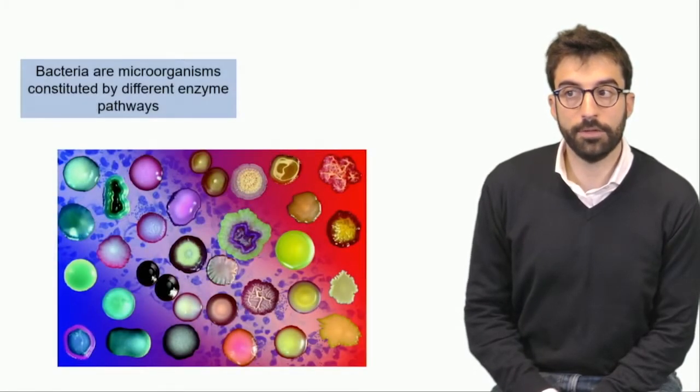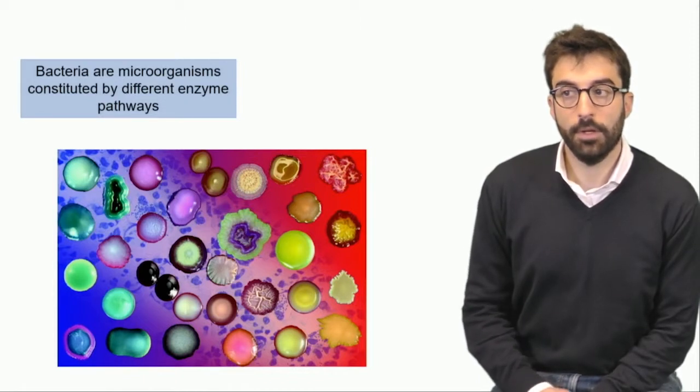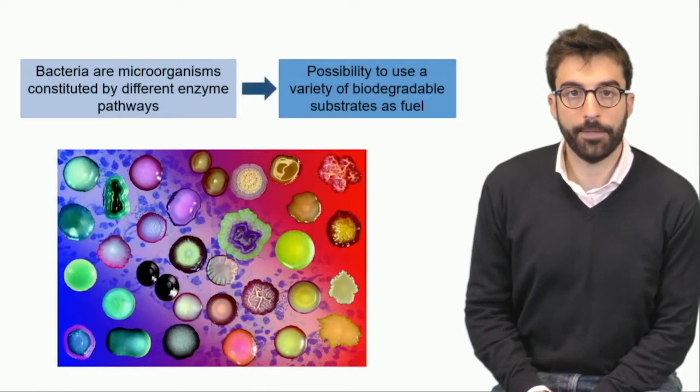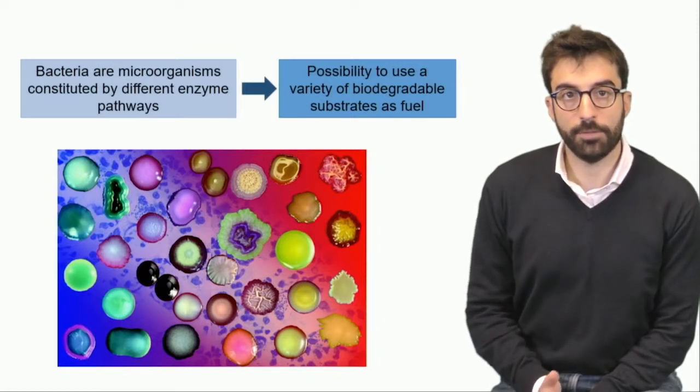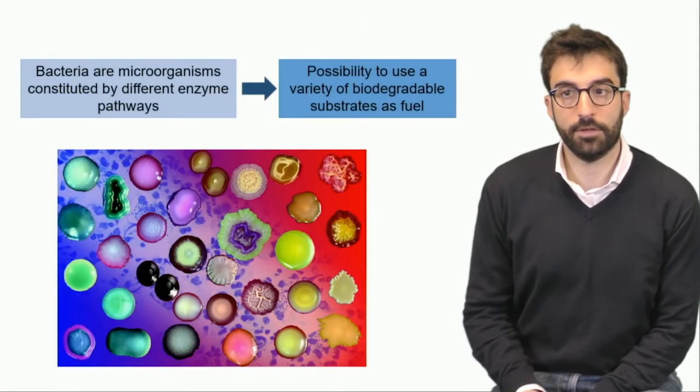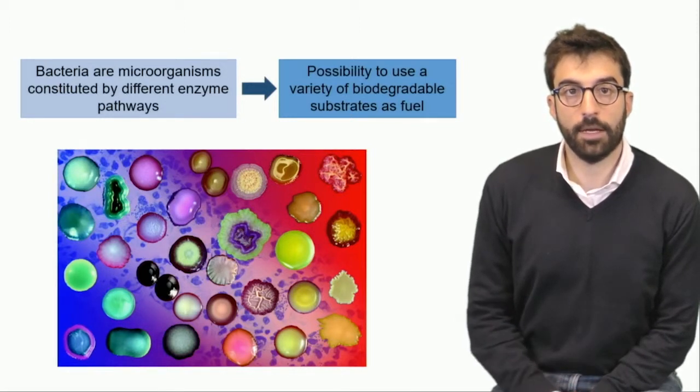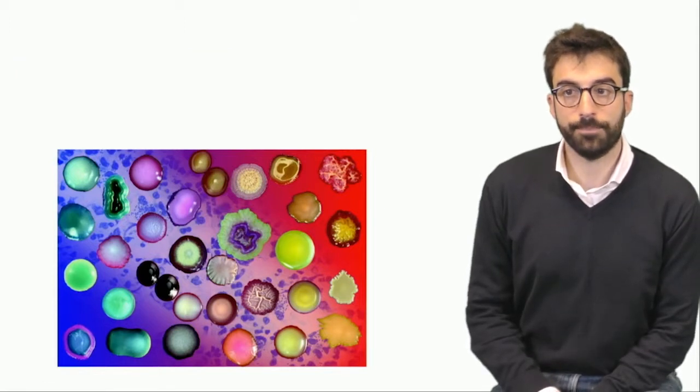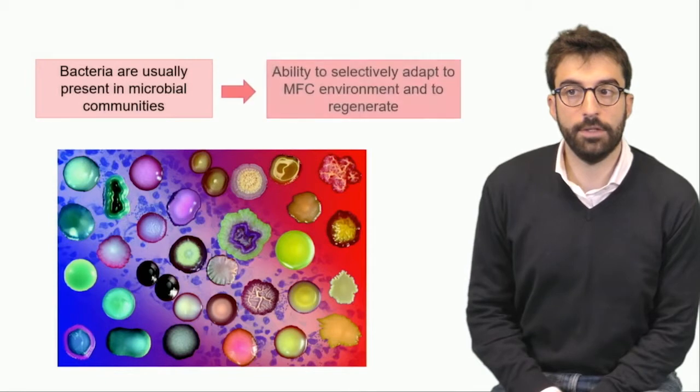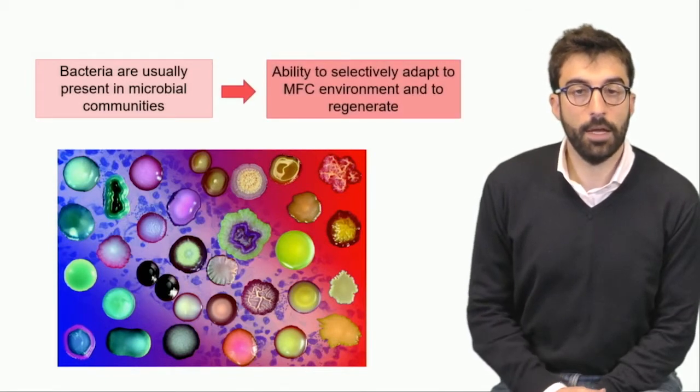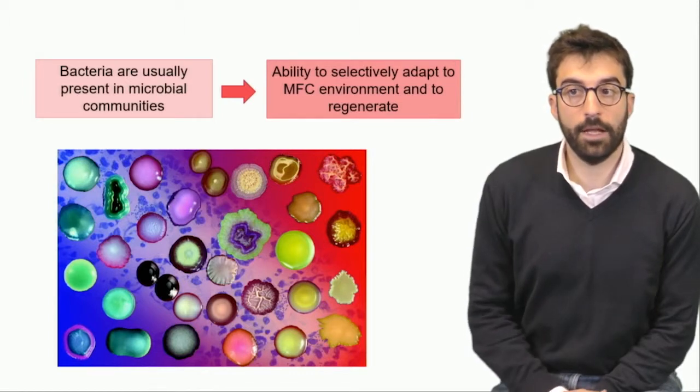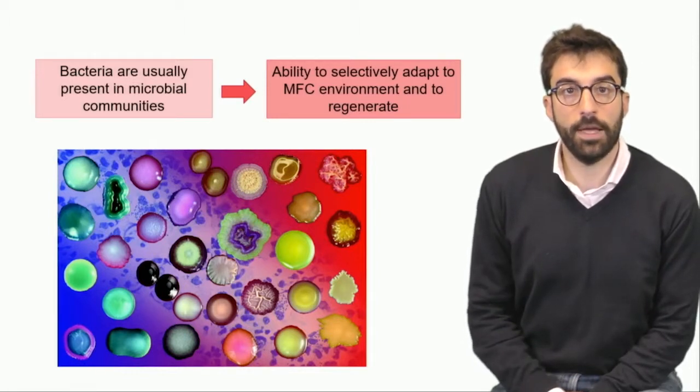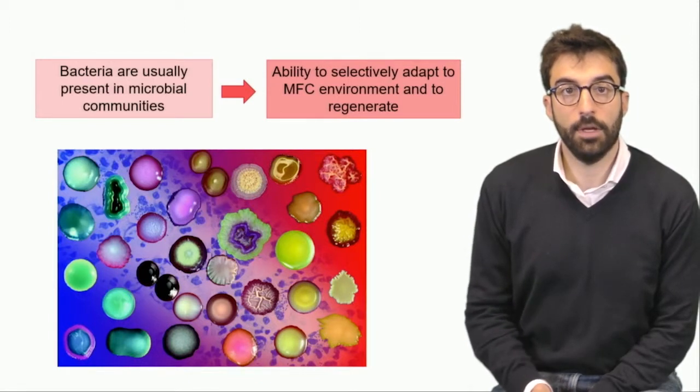What kind of bacteria do we use? The interesting aspect is bacteria are microorganisms that are constituted by different enzyme pathways. It's pretty interesting because it doesn't necessarily connect one specific bacteria to the organic waste, but it's a sort of variety that can all be treated by bacteria—different kinds of substrates can be used and treated as fuel. At the same time, bacteria are usually present in communities and this is an ability to be selective, to adapt to microbial fuel cell environment and also to regenerate. It means that a community can continue and we don't need to replace bacteria with new ones, but we have a continuous process.